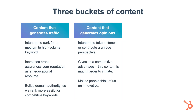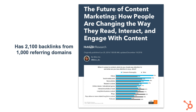The second category that we create is usually called thought leadership or link bait. Unlike the first bucket of content, the goal is not to rank for keywords, although it might do that anyways. The target is usually generating buzz and backlinks. Here's another example from HubSpot. This page has gotten more than 2,000 backlinks and was covered by some pretty cool sites like Forbes, Entrepreneur, and Moz.